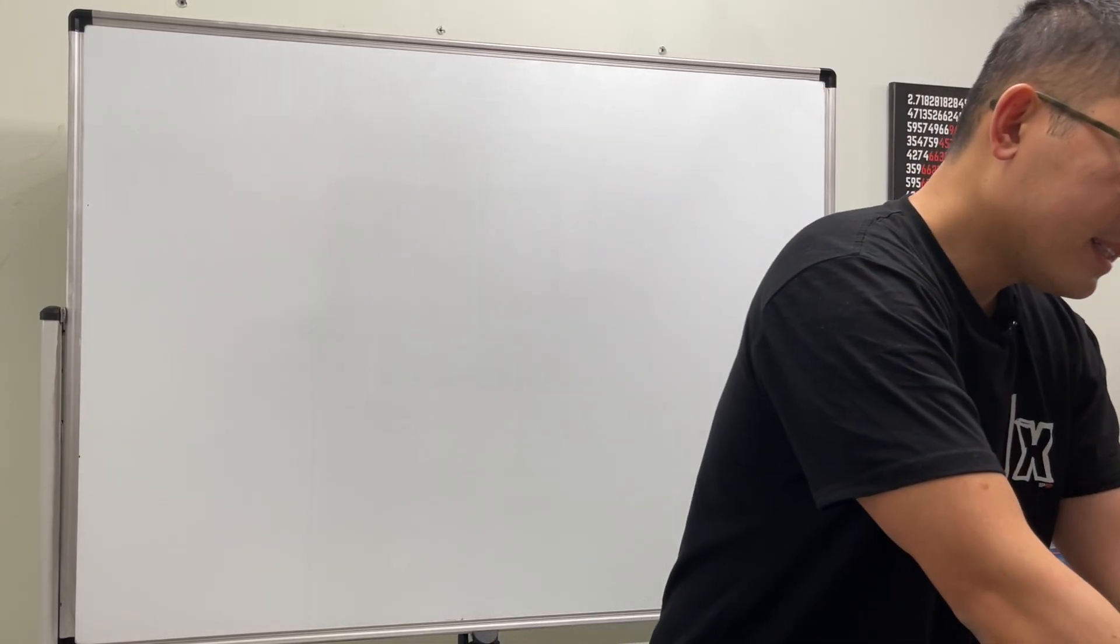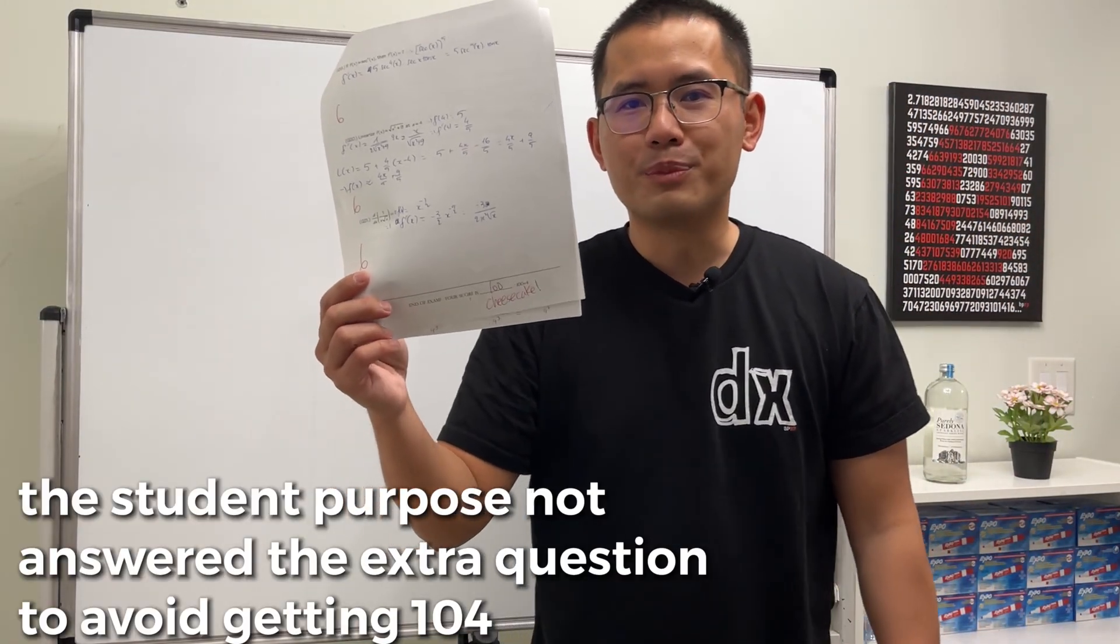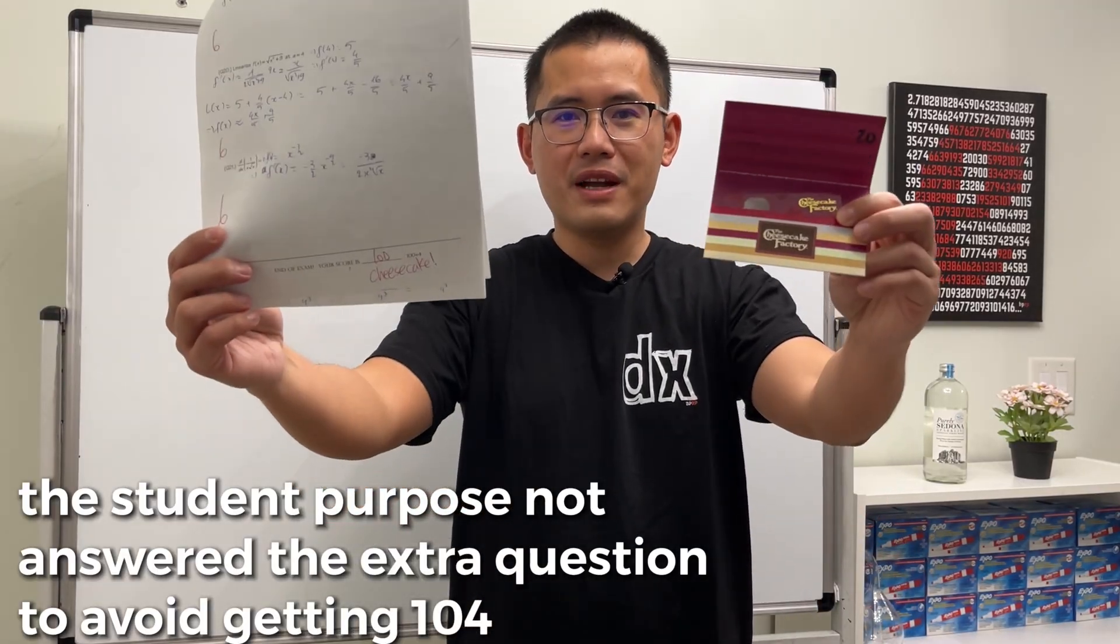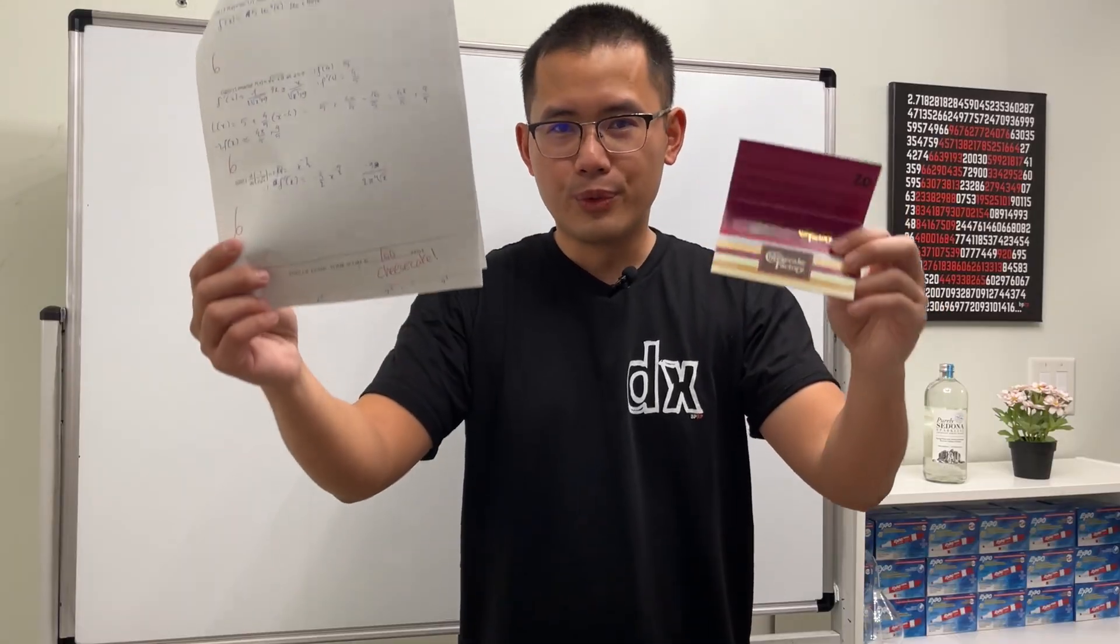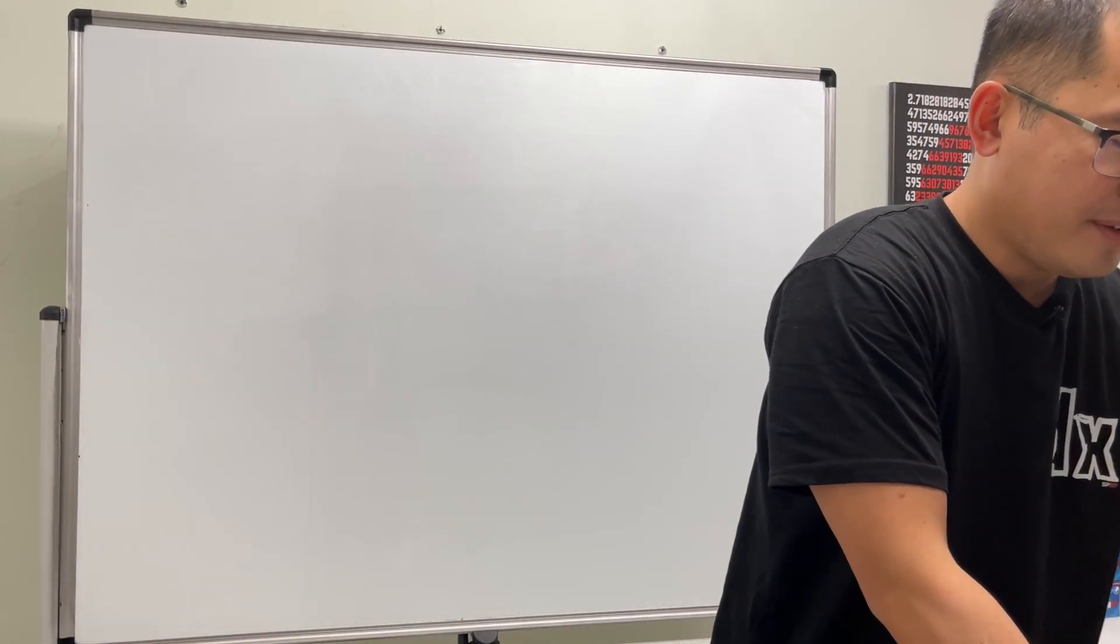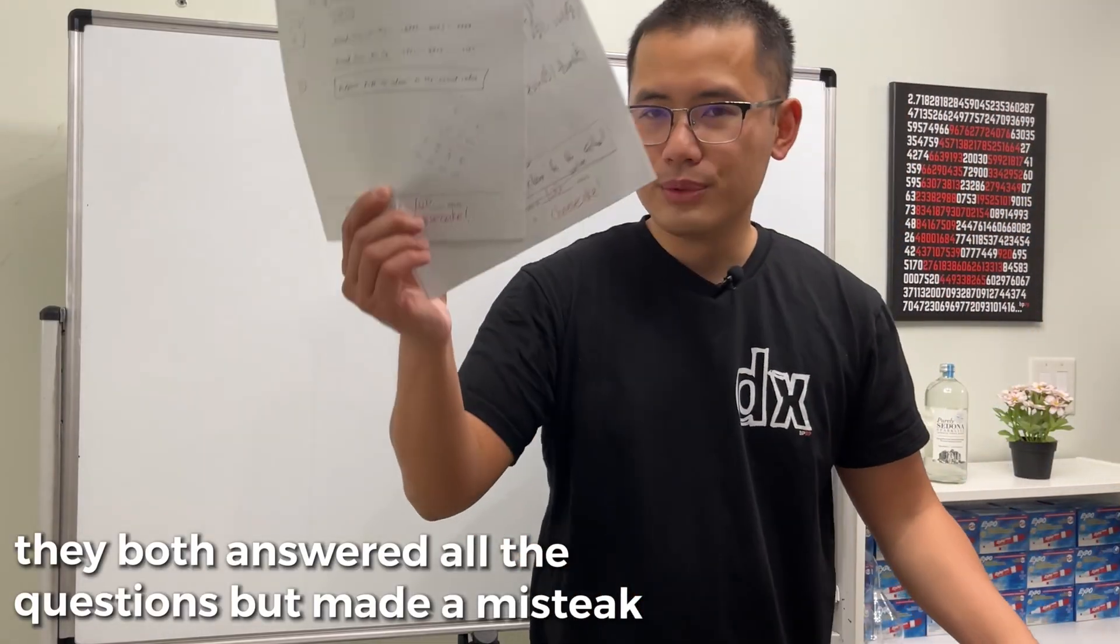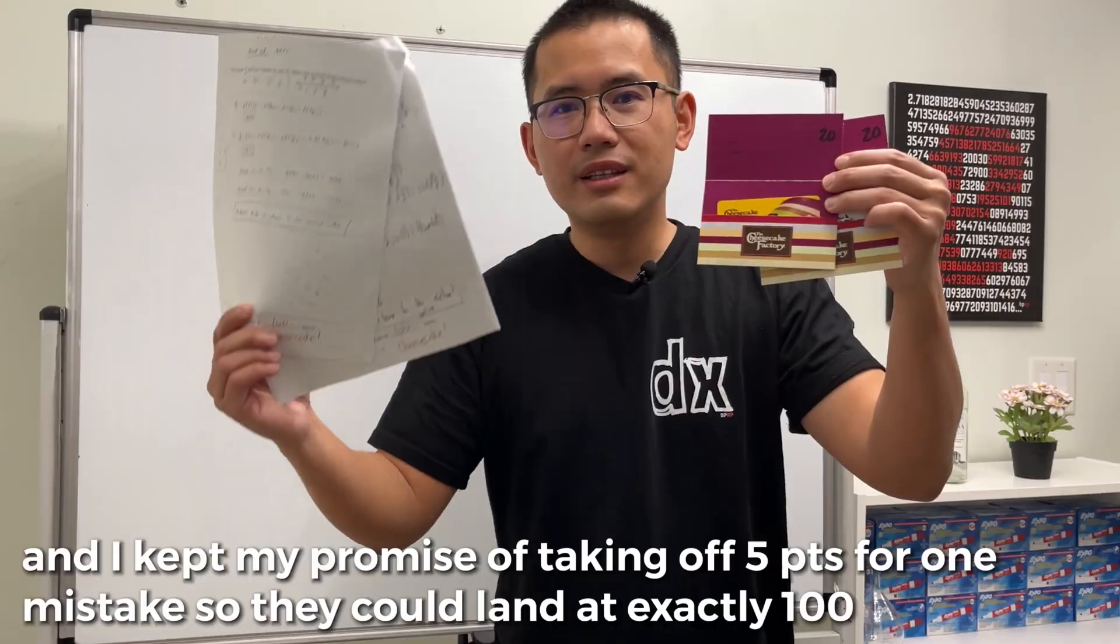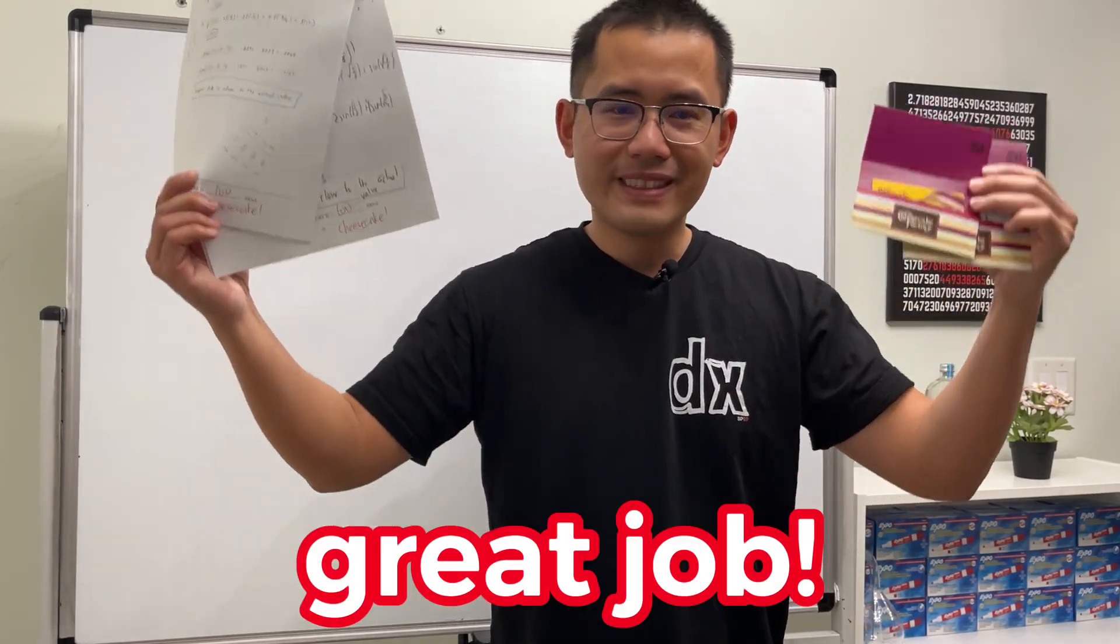So for my Calc 1 class, I have one student who got 100% and the student is going to get a $20 gift card to Cheesecake Factory. So congratulations. You know who you are. Great job. And then for my Calc 2 class, I have two students who got 100%. And of course, they are also going to get the gift card as well. So great job.